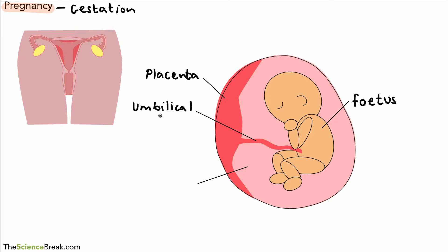A tube coming off the placenta is called the umbilical cord. The baby is actually in a liquid called amniotic fluid.